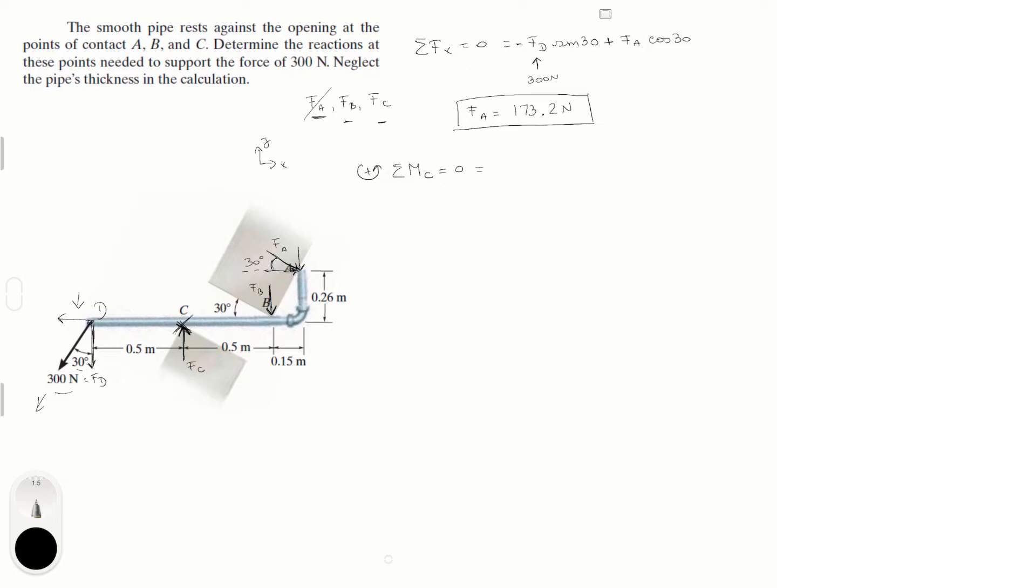And this is equal to first the moment created by D. For D, only the y component is generating a moment. The x component is going straight away from C so that's not generating a moment. So the y component of D is given by F of D cosine of 30, and you need to multiply it by the distance from C to D which is 0.5. And it's trying to turn this counterclockwise so it's positive. The second one creating a moment is F of B which is going straight down. So everything about F of B is creating a moment times the distance from C to B which is 0.5 and it's trying to turn it clockwise so it's negative.